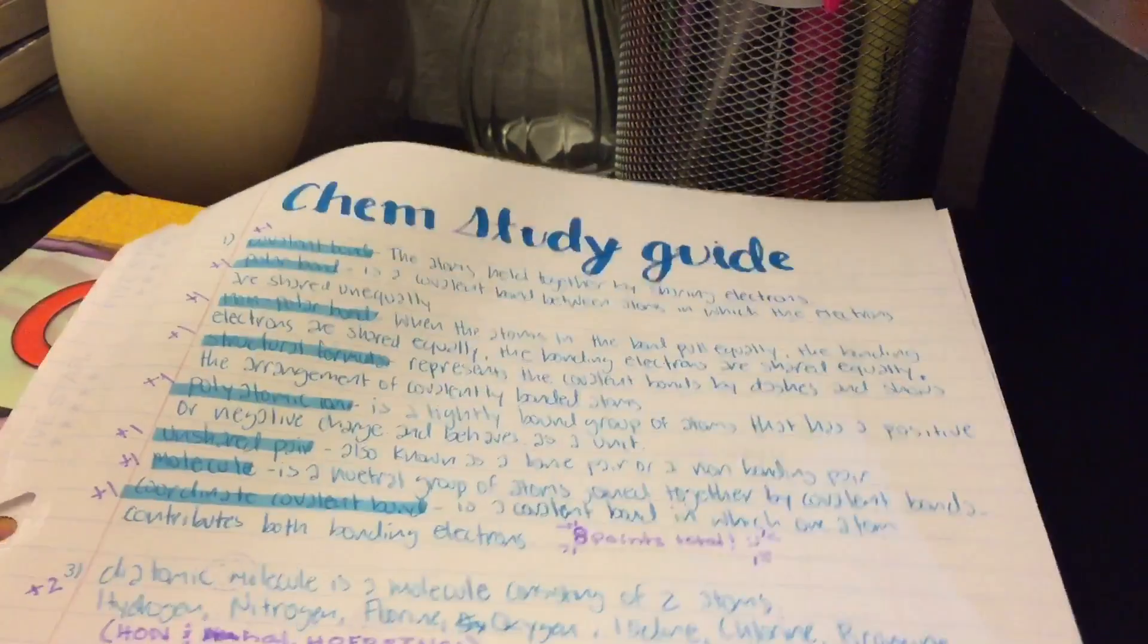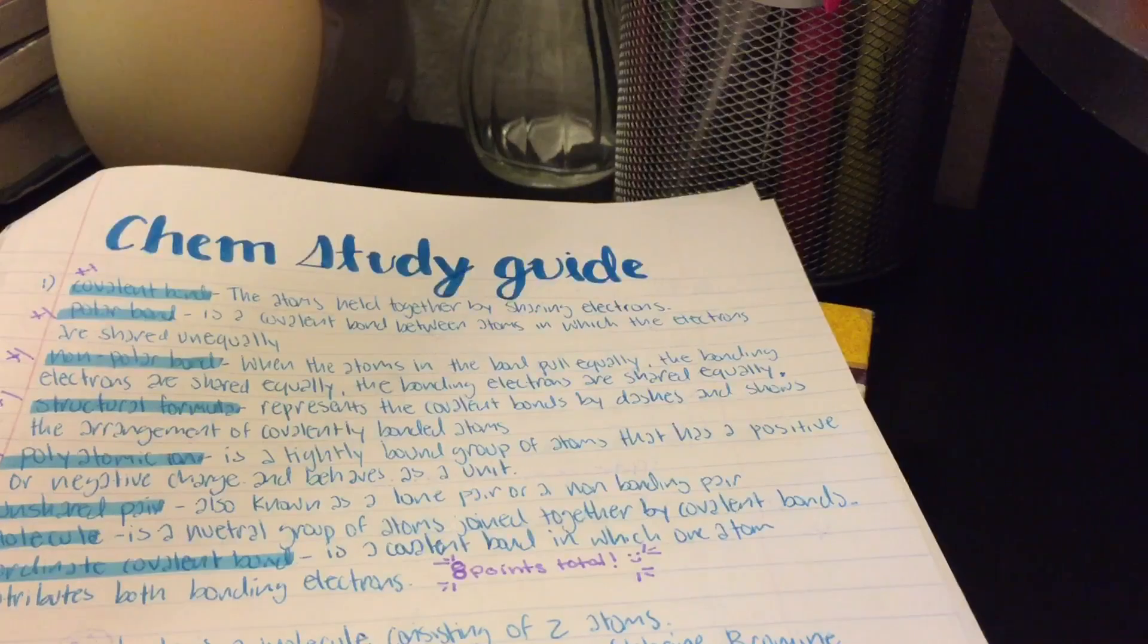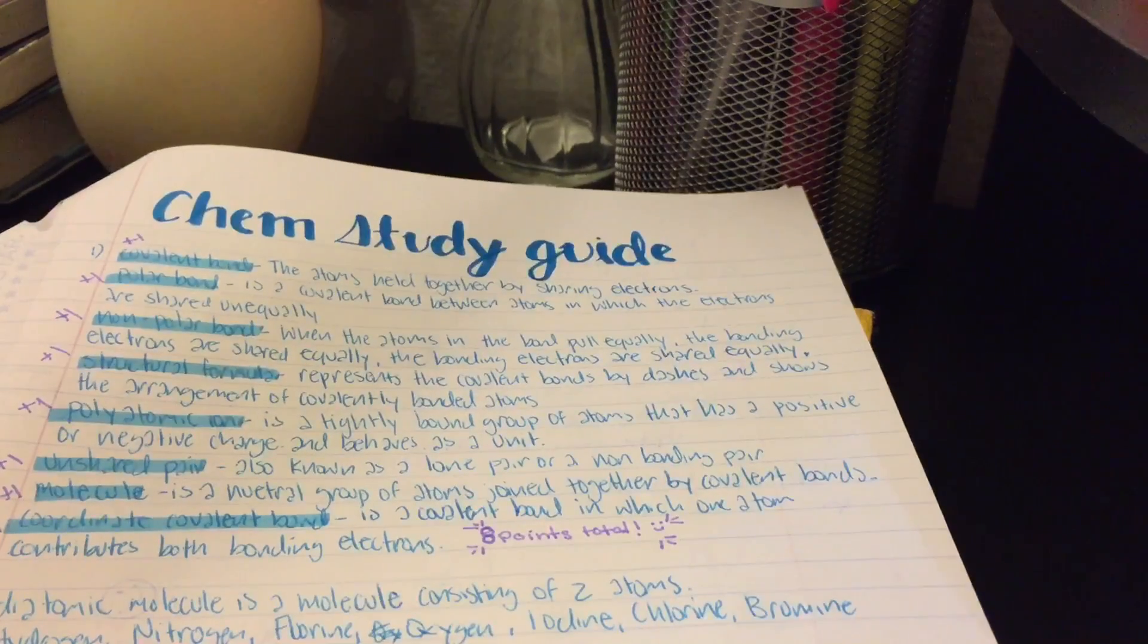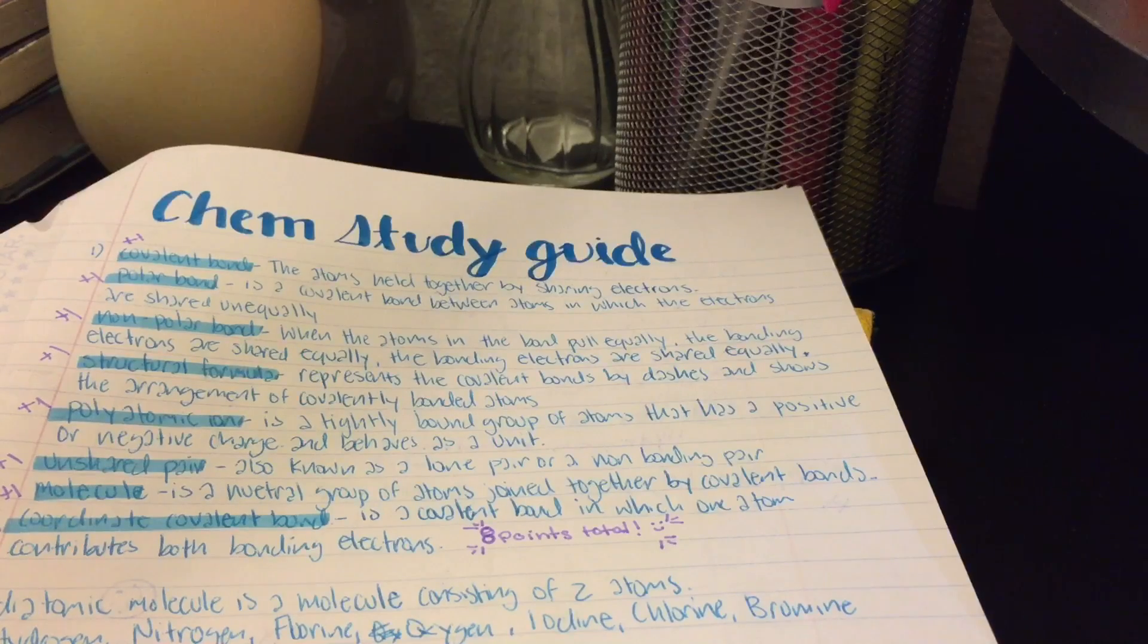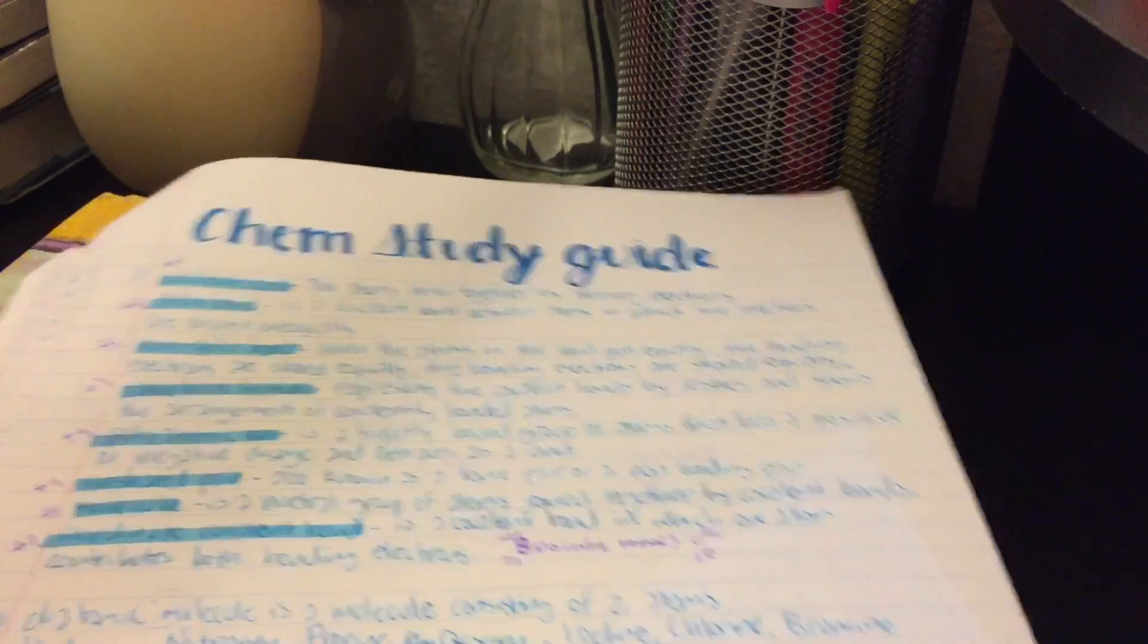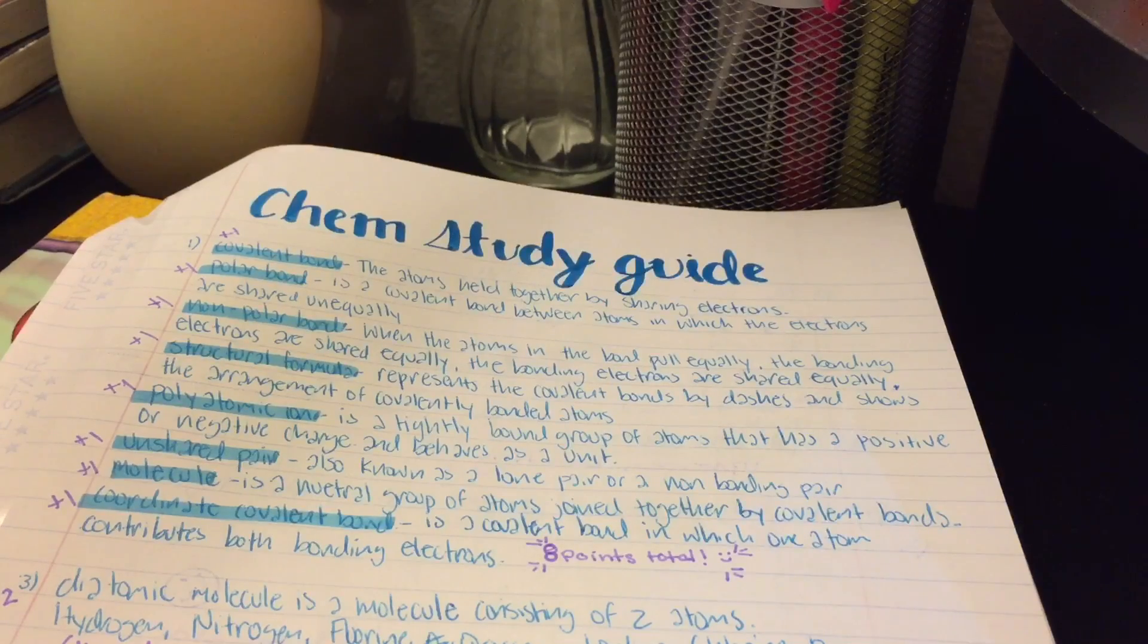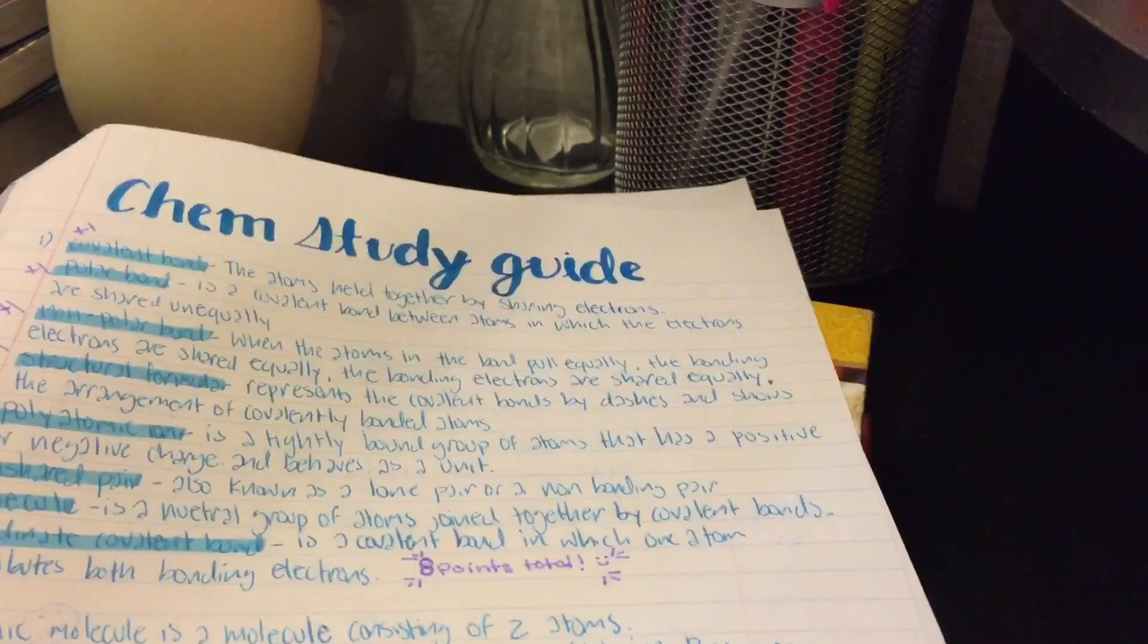So I usually study the study guide by just trying to memorize a lot of the vocab because that's a thing that my teacher is very big on. So I will just study the vocab and then I'll just try to answer all of the easy questions. And then if I do need help, I'll just go back in the book or in my notes and try to answer the hard ones.